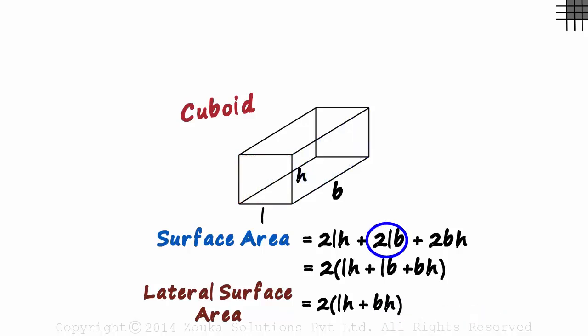We ignored 2LB as they are the areas of the top and bottom surfaces. So these are the two types of surface areas we had to understand.